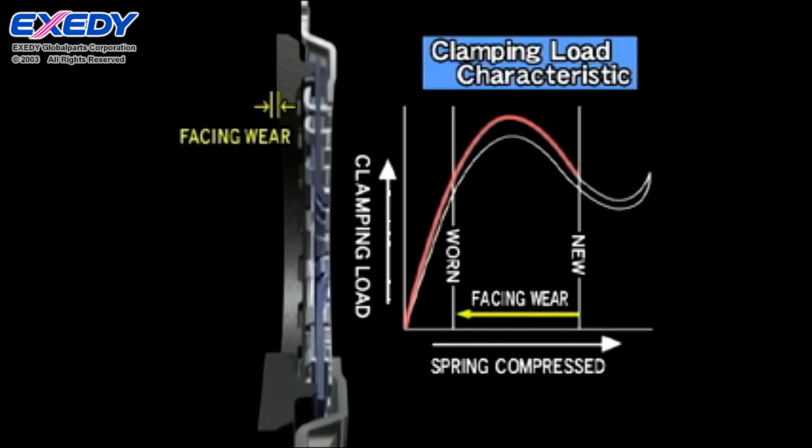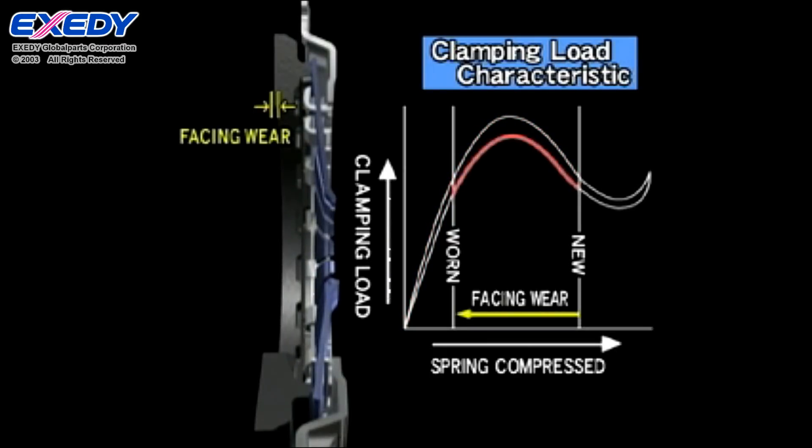This indicates the clutch disc's usable range. If wear exceeds this range, it will be impossible to obtain the necessary compression force and the clutch will slip.